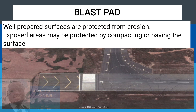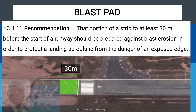However, pavements used for blast pads are usually not strong enough for frequent use of aircraft. Only emergency vehicles are able to use it, not frequent movement of aircraft. Annex 14 recommends that that portion of a strip to at least 30 meters before the start of a runway should be prepared against blast erosion in order to protect a landing airplane from the danger of an exposed edge.